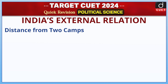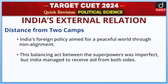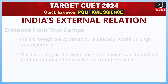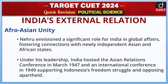Distance from Two Camps: India's foreign policy aimed for a peaceful world through non-alignment. This balancing act between the superpowers was imperfect, but India managed to receive aid from both sides. Afro-Asian Unity: Nehru envisioned a significant role for India in global affairs, fostering connections with newly independent Asian and African states. Under his leadership, India hosted the Asian Relations Conference in March 1947 and an international conference in 1949, supporting Indonesia's freedom struggle and opposing apartheid.